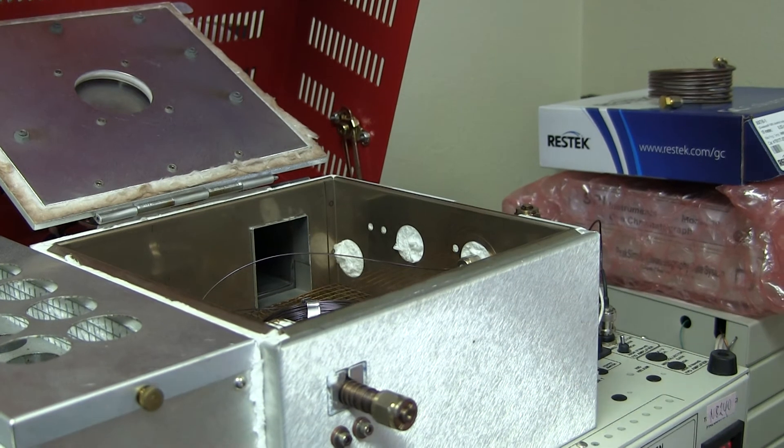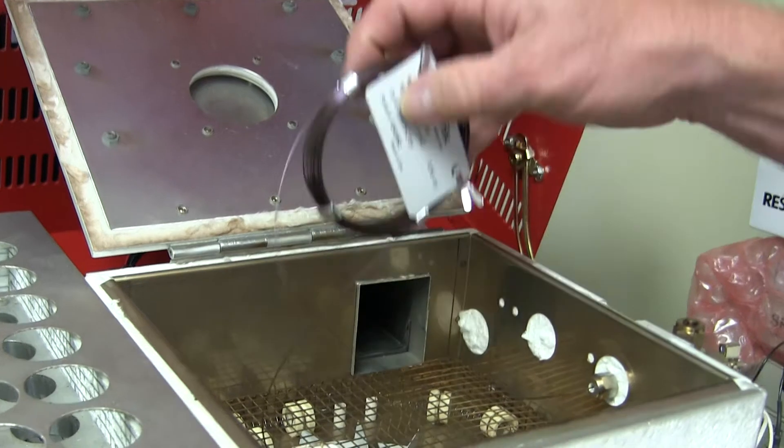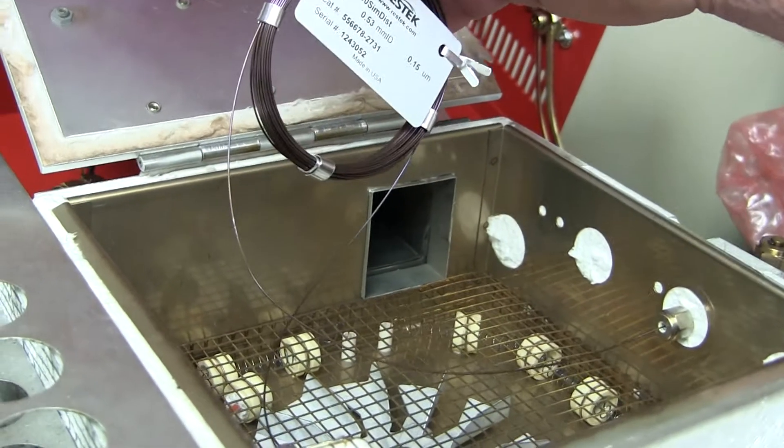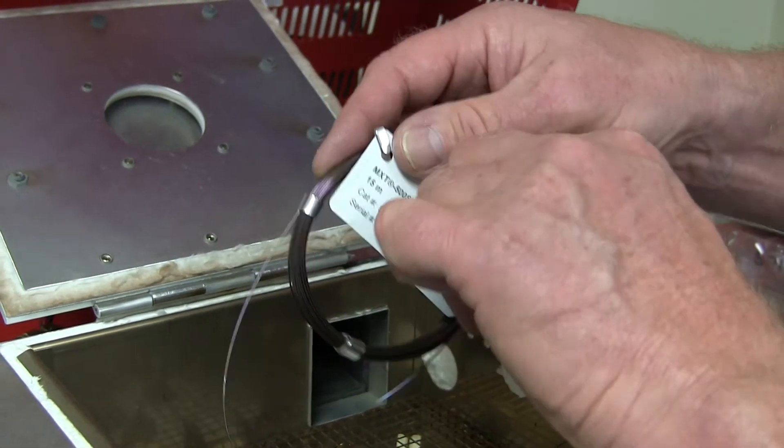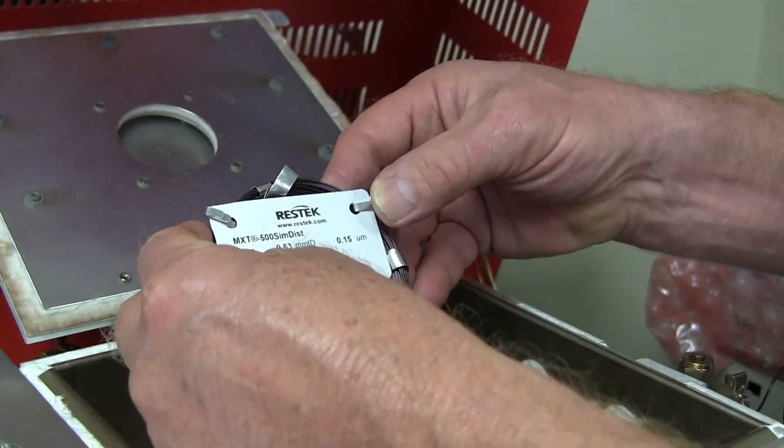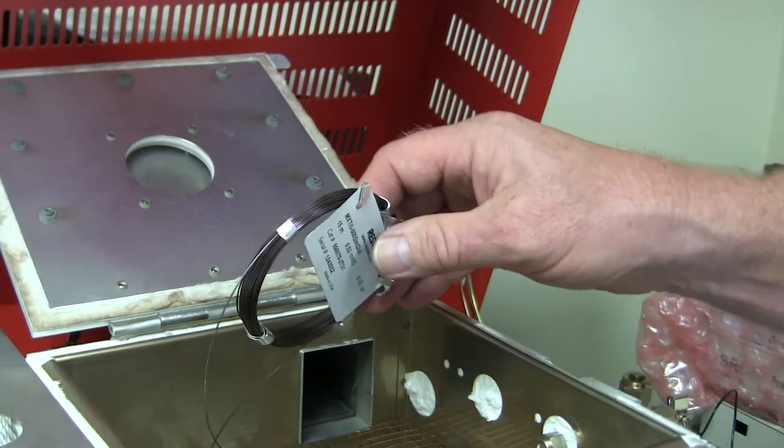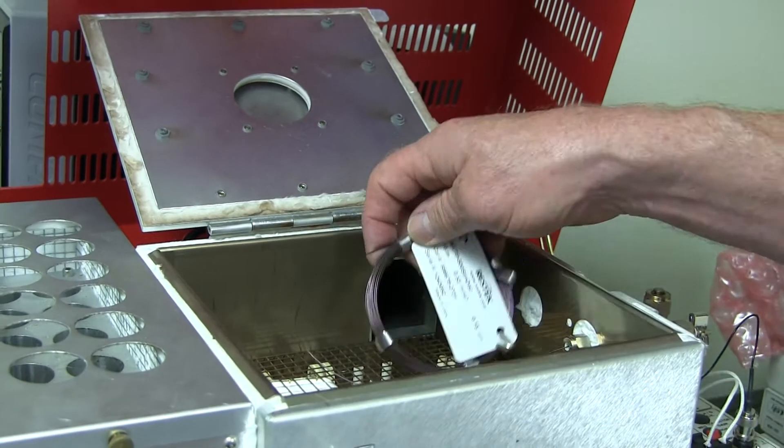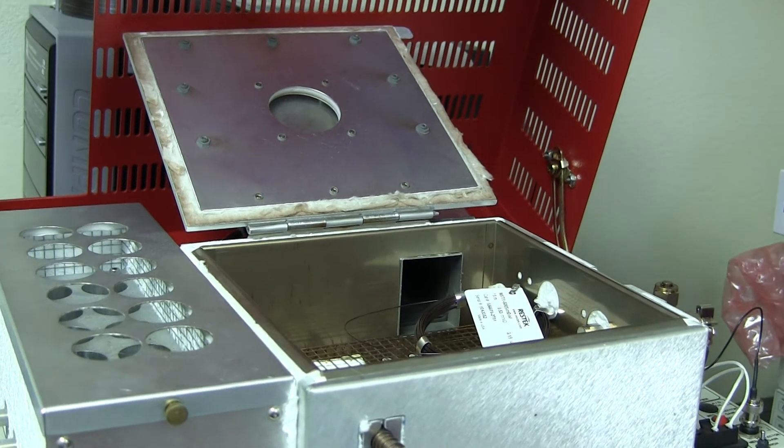Another meaning of the word bake out is to bake out the column itself. This is a capillary column that has a temperature limit of over 400 degrees. If we were baking this kind of column out, this is a Restek MXT 500. It's meant to be a very high temperature column, so it's easy to bake this one out at 400 degrees or 350 or whatever you think is safe.